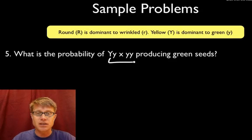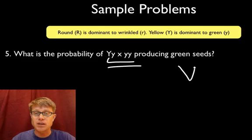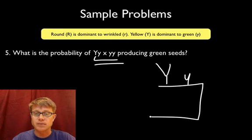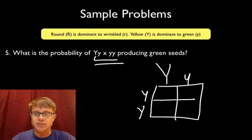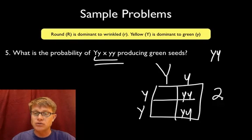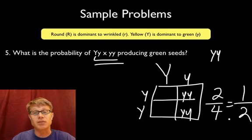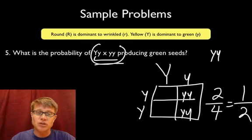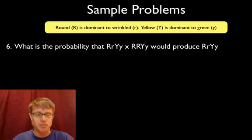Number five: what's the probability that this cross produces green seeds? Do the same thing again — big Y, little y crossed with little y, little y. Green seeds are little y, little y. You can get it in two of the four boxes, so that's a 2 in 4 or 1 in 2 probability of getting green seeds. Even though you might think you're super smart, do a Punnett square — you'll never miss the problem.